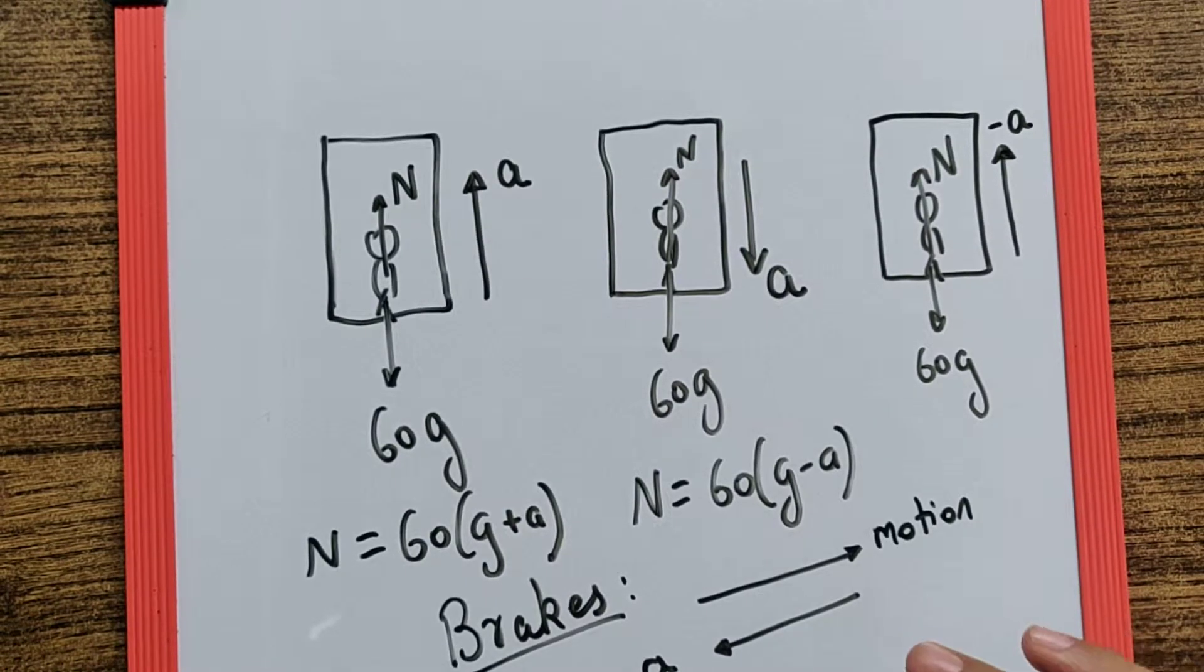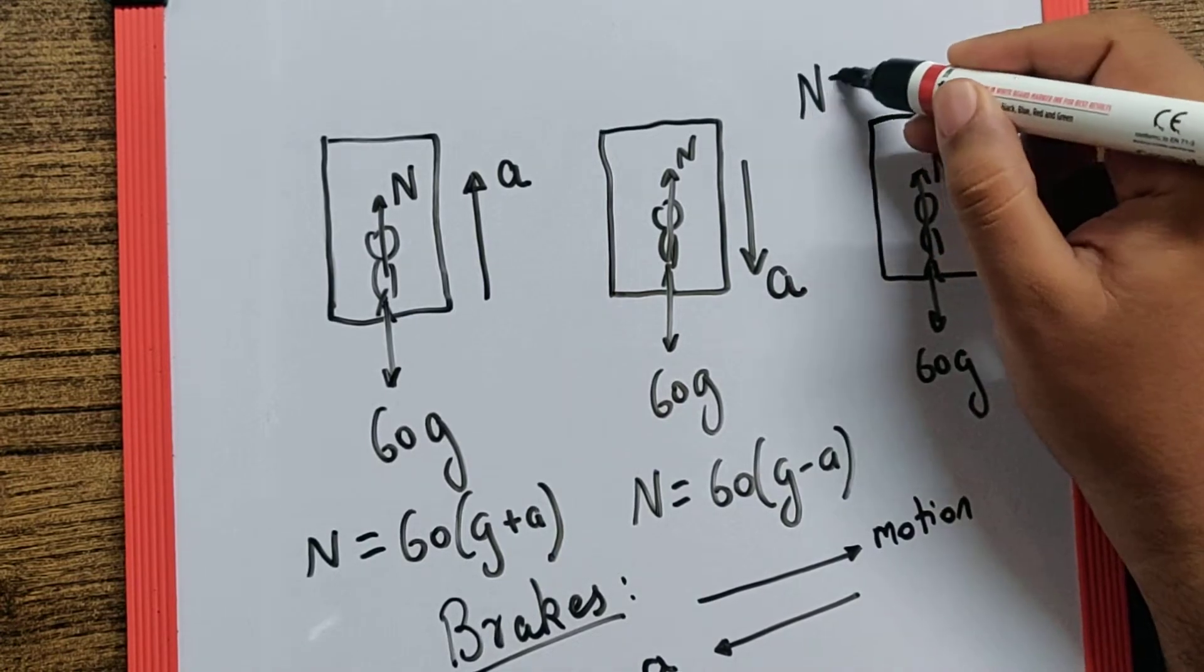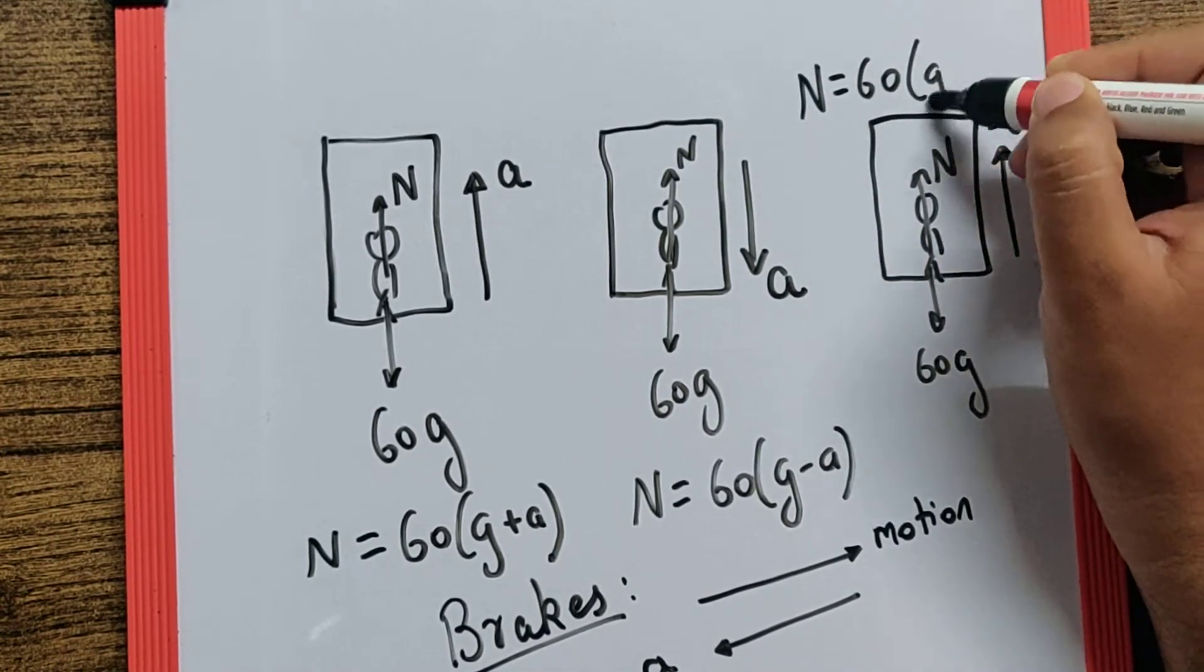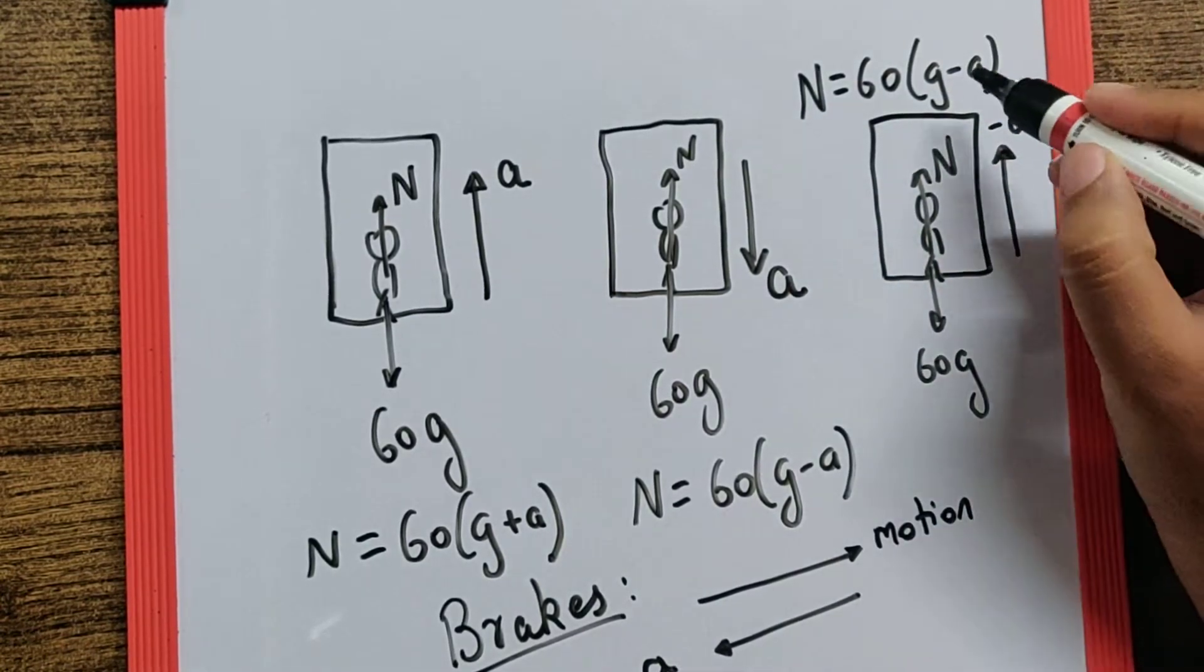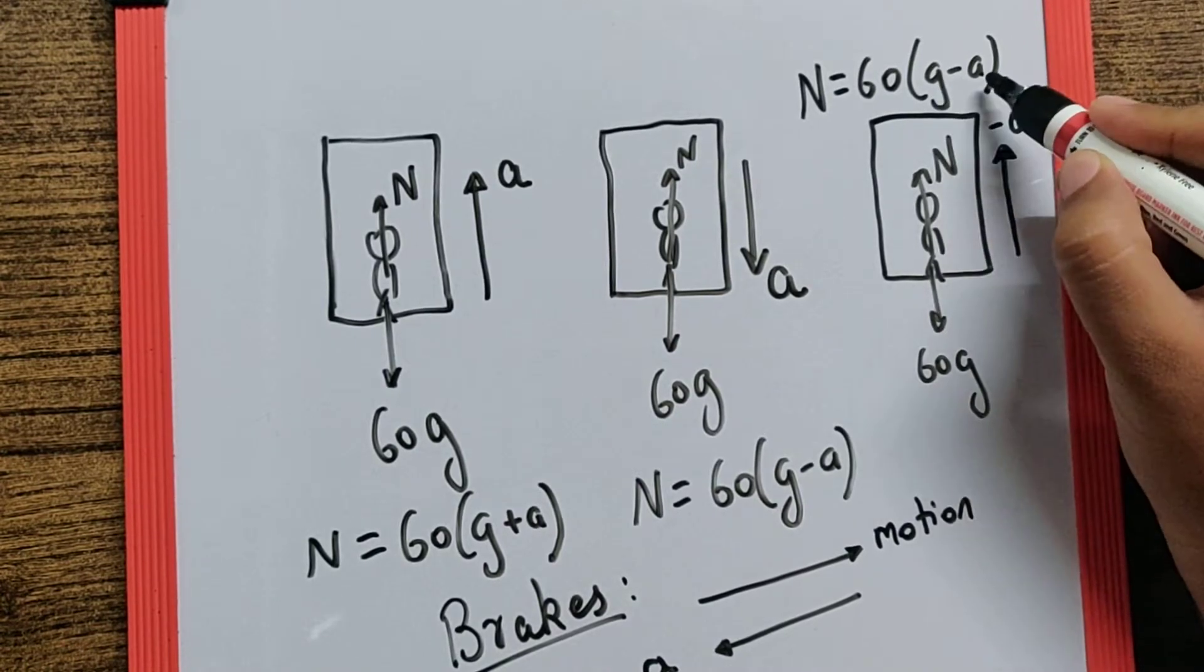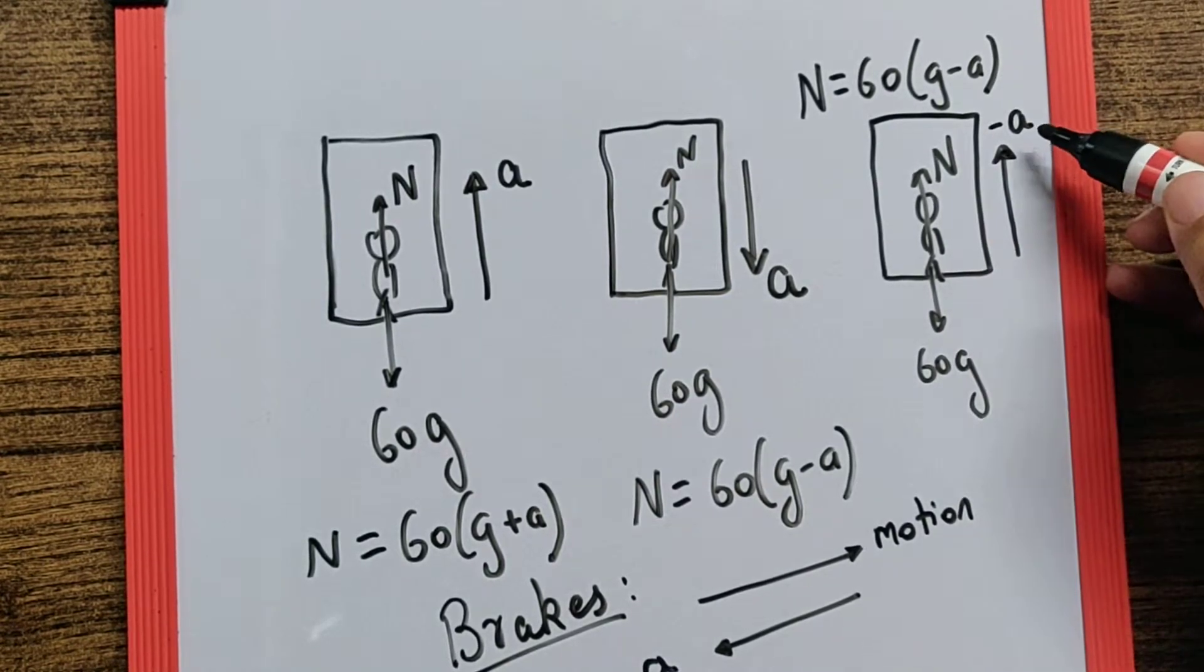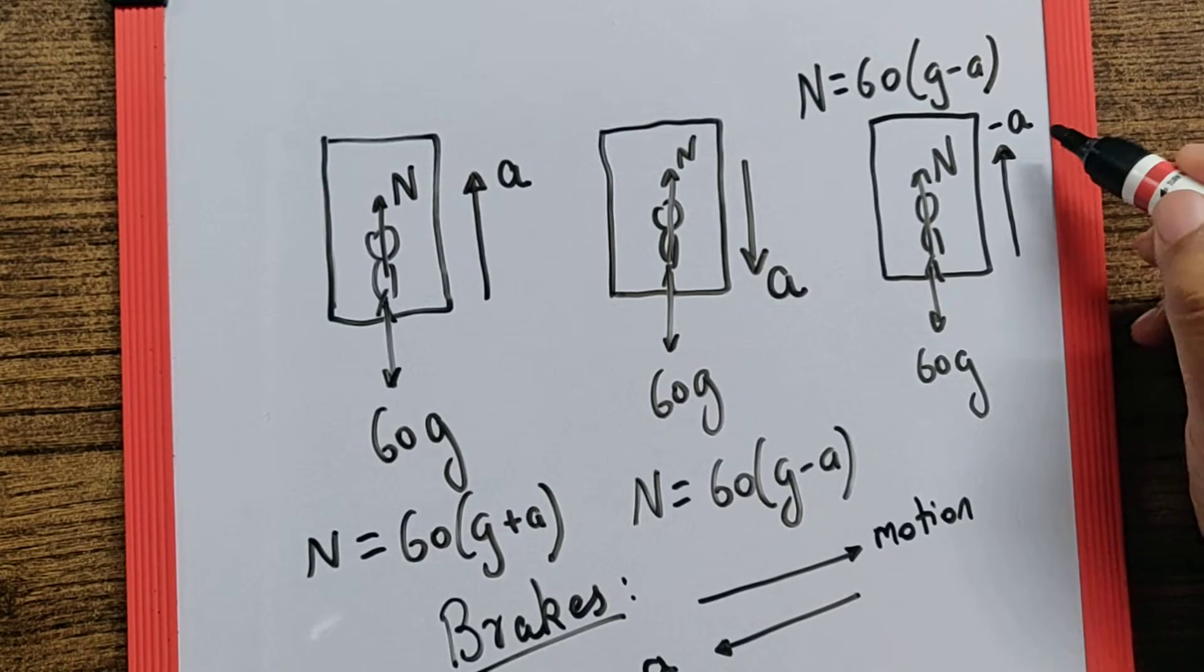Therefore here I can say N is going to be 60 bracket G minus a. Why? Because it has to be G plus a, but acceleration itself is negative because it's a brake which is applied over here, and this can happen for a moment.